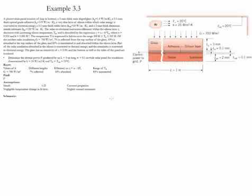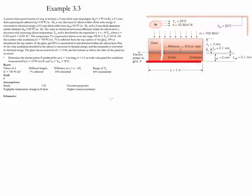Example 3.3. In this example we have a photovoltaic panel which consists of five different materials: glass, followed by adhesive, then silicon, then solder, then aluminum nitride substrate.